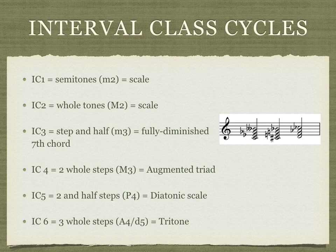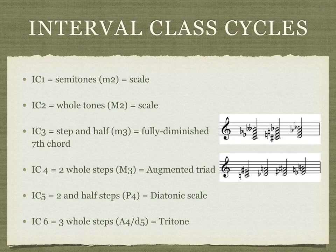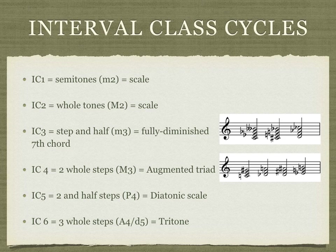An interval class 4 cycle creates an augmented triad, which also divides the octave evenly. There are only four different enharmonically spelled augmented triads that can be constructed using this cycle — again, important for constructing a symmetrical scale later on. Interval class 5 is the only cycle that hits all 12 chromatic pitches before returning to the starting pitch, and therefore does not divide our octave evenly. Lastly, interval class 6 creates a two-note tritone, which divides the octave evenly, but does not help us create any scales.